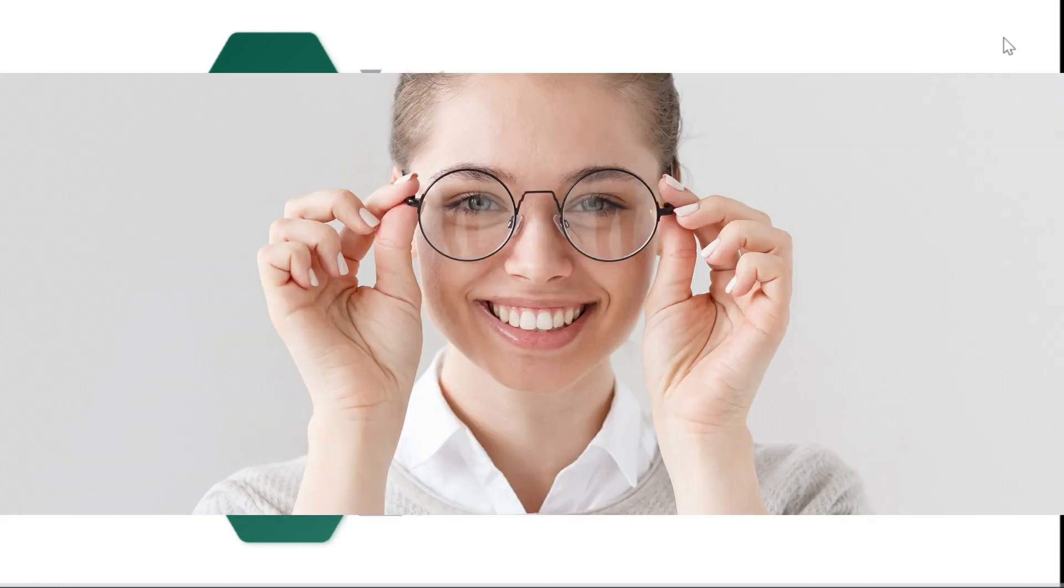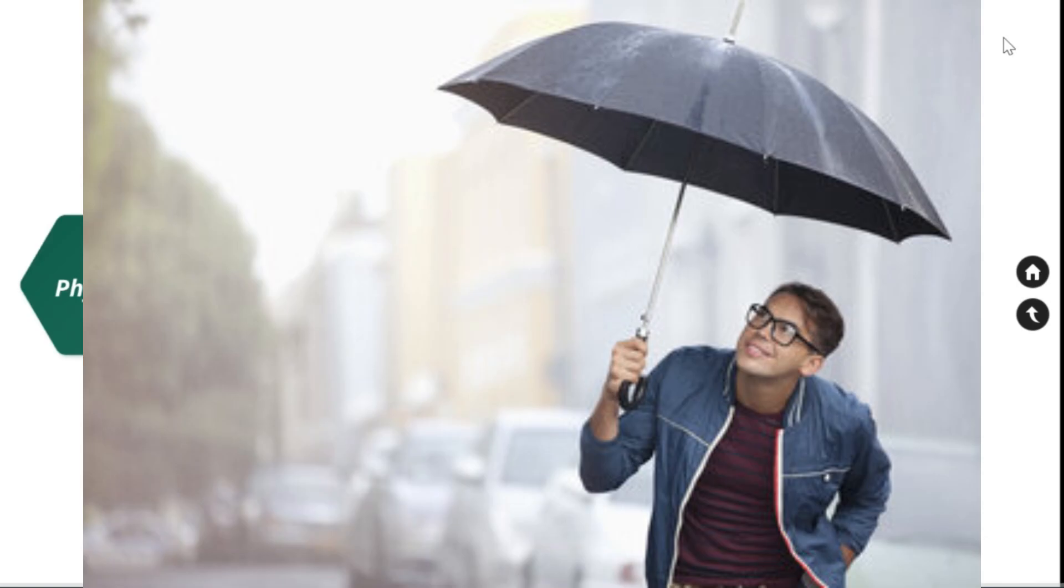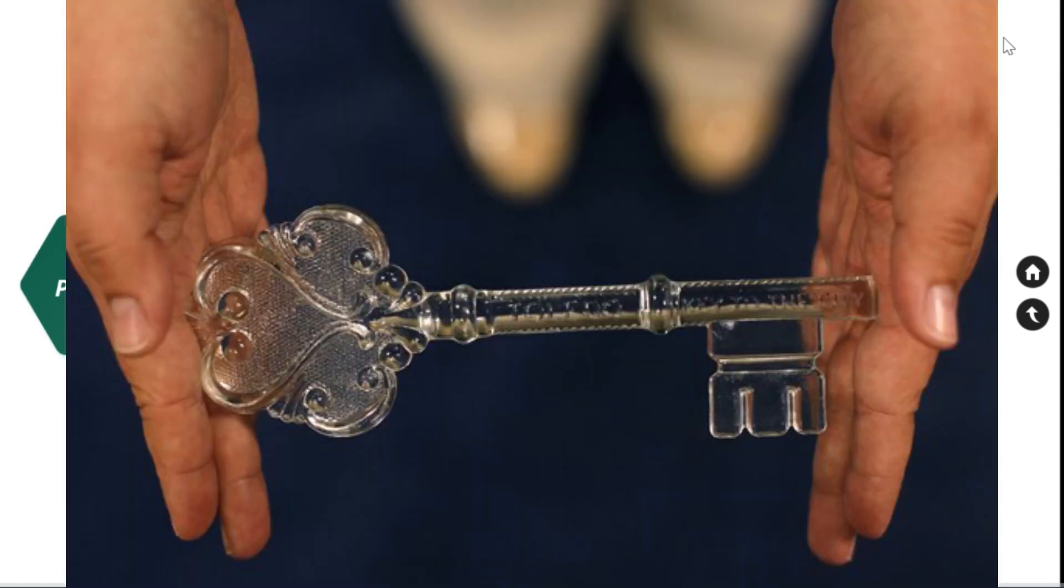Consideration of properties of material is important when we choose a material for a specific product. For example, if spectacles are not made out of transparent material, we will not be able to see anything. If umbrella material absorb water, we will get wet in the rain. Similarly, if the keys are made out of glass, that will break when we use it.